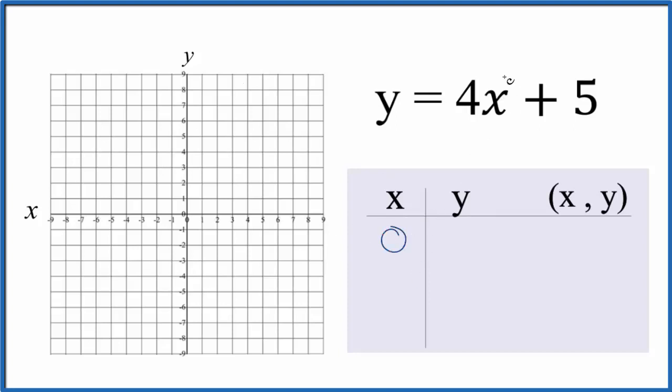So I'm going to start out with 0, because 4 times 0, that's 0. 0 plus 5 is 5.